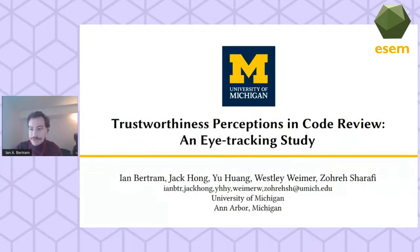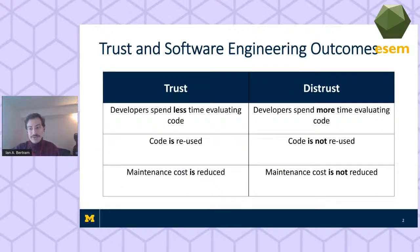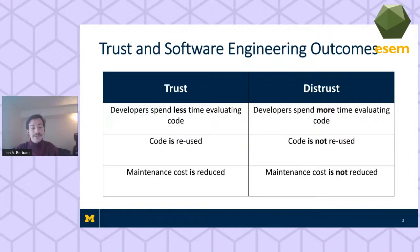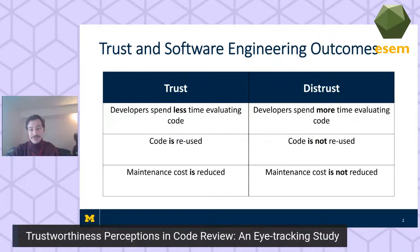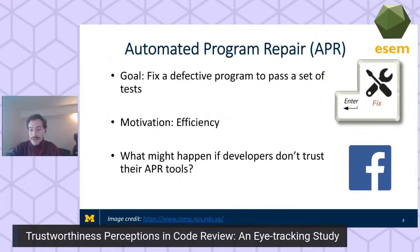Hello, I'm Ian Bertram, an undergraduate at the University of Michigan, and this is 'Trustworthiness Perceptions in Code Review: An Eye Tracking Study.' Our goal is to examine trust and software engineering outcomes — specifically trust in a particular segment of code. There are several notable advantages of code reuse, but code reuse is most efficient when developers trust the code in question.